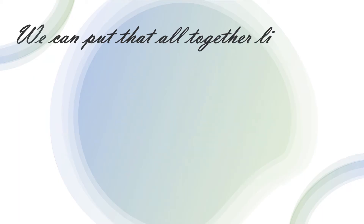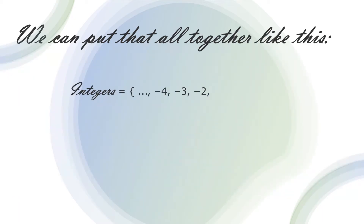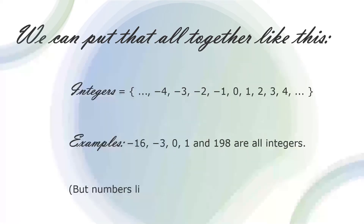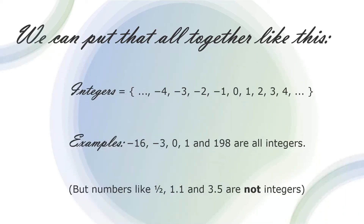We can put that all together like this. Integers — examples: negative 16, negative 3, 0, 1, and 198 are all integers. But numbers like one-half, 1.1, and 3.5 are not integers.